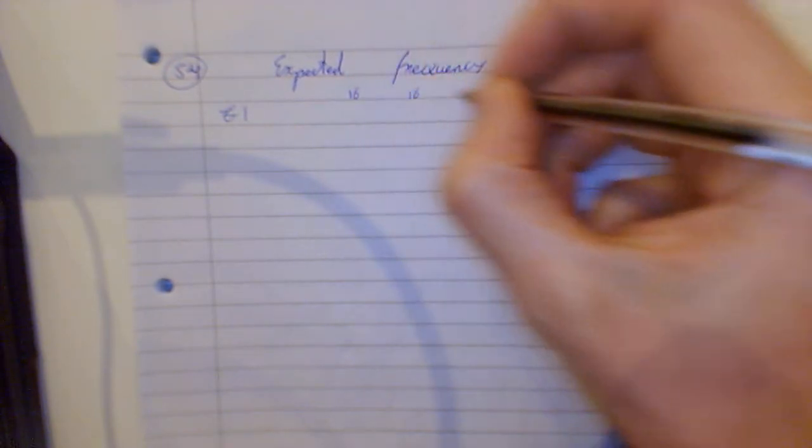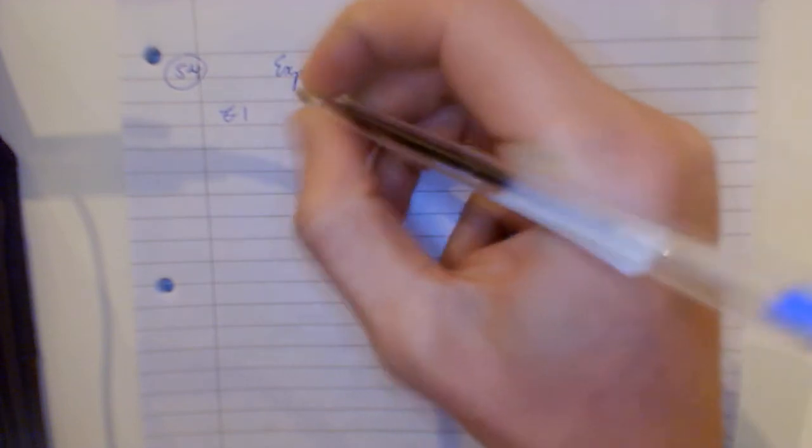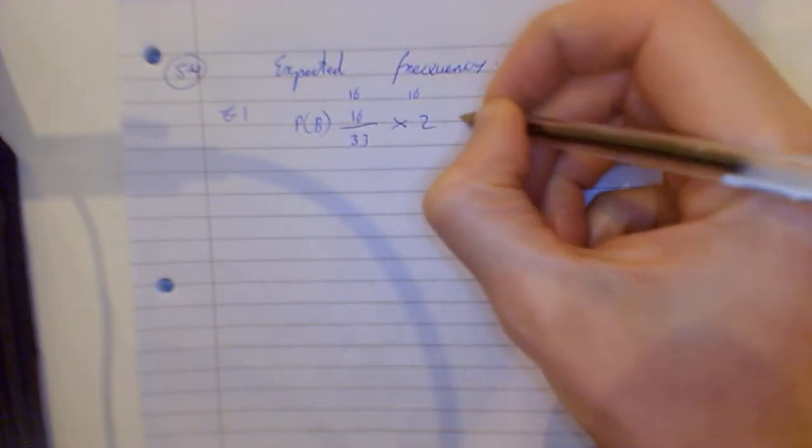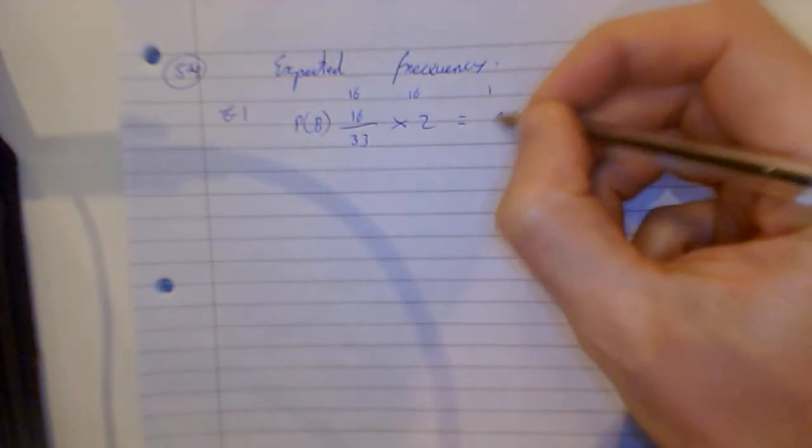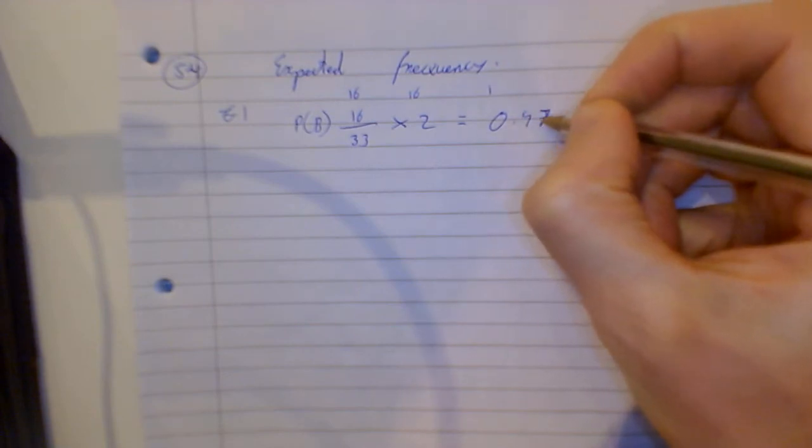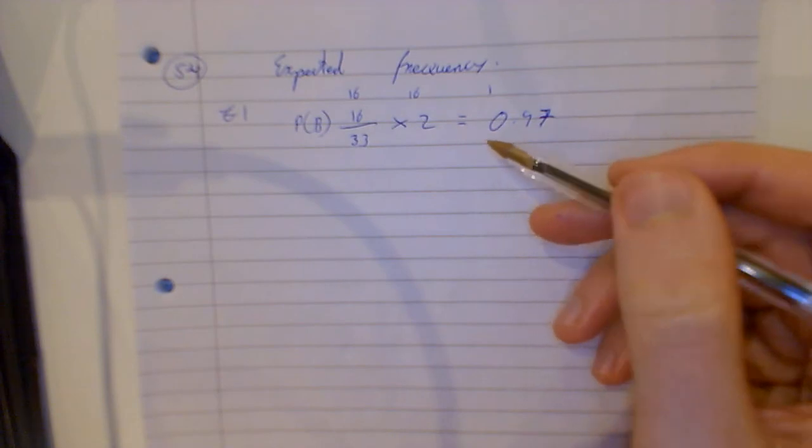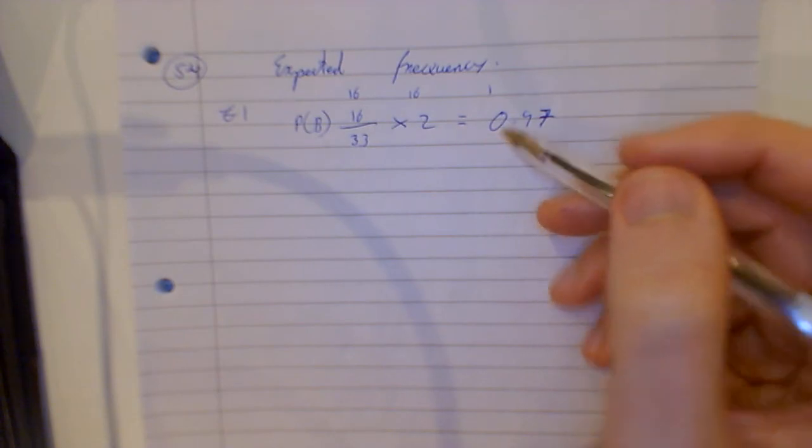I can't even remember what it is - I think there's 16 black, 16 red, one green. So 16 out of 33, let's say that. Probably black, and then I multiply by... I double my money, times two, and that will give me just below... 0.97 I think it is. So that gives me a three cent loss every time I play that game.